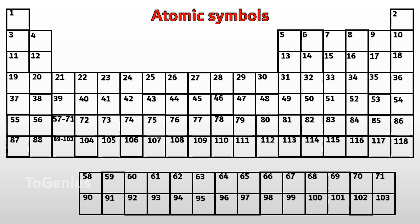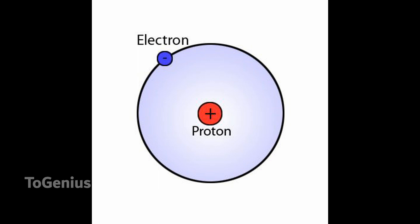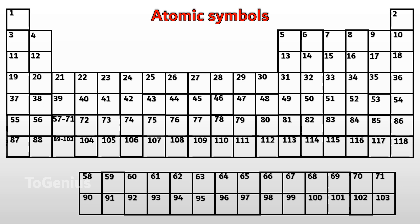An atomic number of 1 means there is one proton in the nucleus. This corresponds to hydrogen. The atomic symbol for hydrogen is H. An atomic number of 2 means there are two protons in the nucleus. This corresponds to helium. The atomic symbol for helium is He. An atomic number of 3 means there are three protons in the nucleus. This corresponds to lithium. The atomic symbol for lithium is Li.